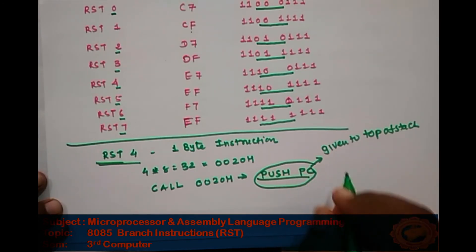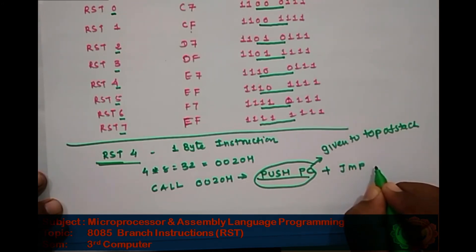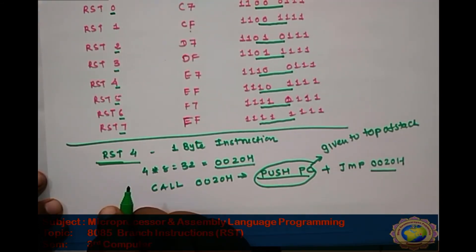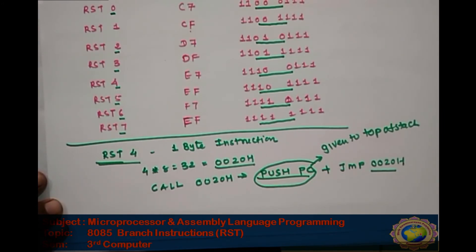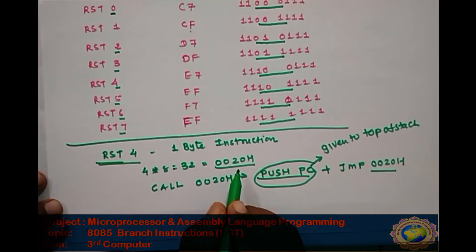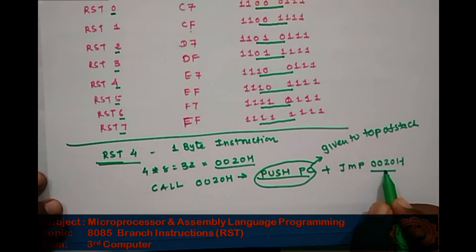When the RST 4 instruction executes, the address of the next instruction is pushed onto the stack (push program counter), and then the processor jumps to address 0020H. Similarly, if we use RST 5, then 5 multiplied by 8 is 40, and the address is 0028H, so it jumps to 0028H. This is how the restart instruction works.